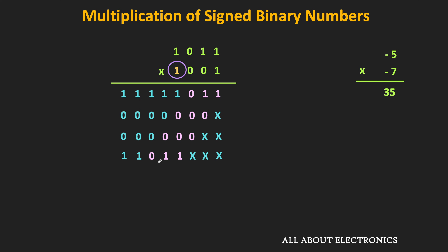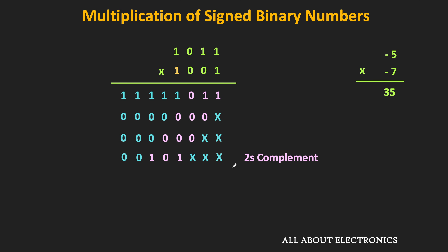When the multiplier is negative, its sign bit or MSB equals 1. During multiplication, if the MSB of the multiplier is 1, then instead of adding the last partial product, we need to subtract it. This subtraction is equivalent to taking the 2's complement of the last partial product. So whenever the MSB of the multiplier is 1, we take the 2's complement of the last partial product, then add all the partial products together.